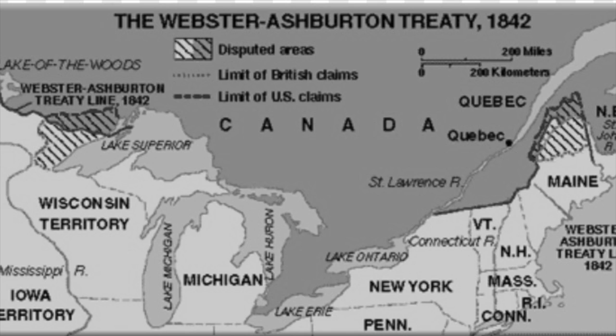The Webster-Ashburton Treaty, signed August 9, 1842, was a treaty that resolved several border issues between the United States and the British North American colonies. Despite his standing as Whig leader, Webster was never able to secure his party's nomination for the US presidency. He did, however, reject the position of Vice President to become the United States Secretary of State under President William Henry Harrison and John Tyler.